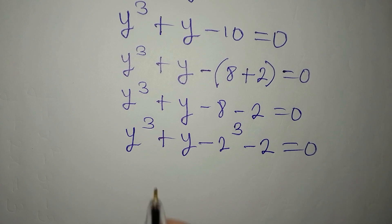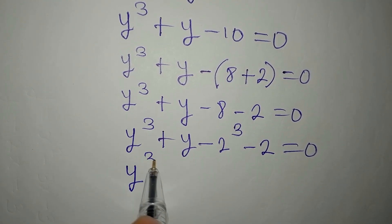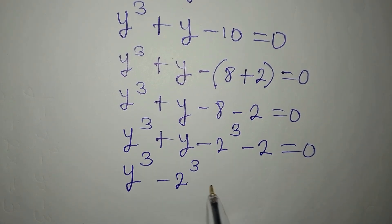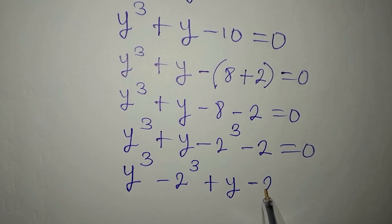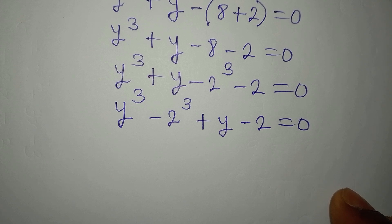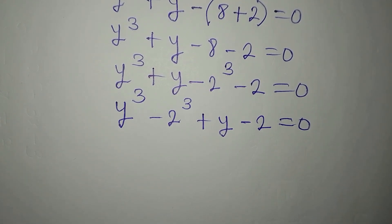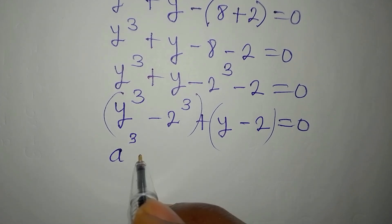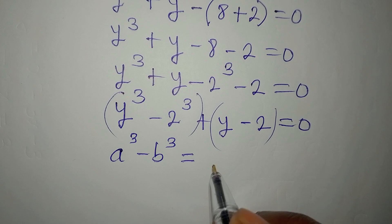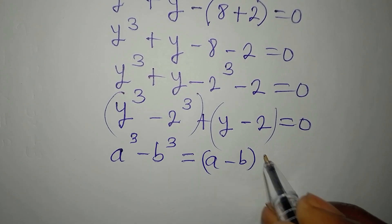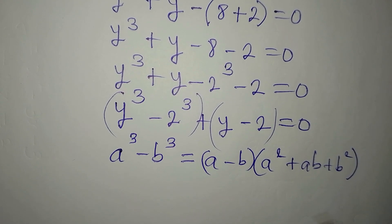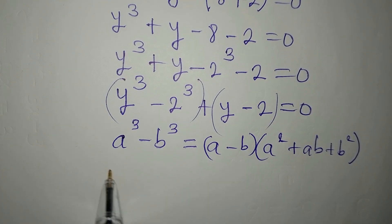We bring together y cubed minus 2 cubed, then plus y minus 2, equals 0. We can now factorize using the difference of two cubes formula: a cubed minus b cubed equals (a minus b)(a squared plus ab plus b squared). In place of a minus b we have y minus 2.